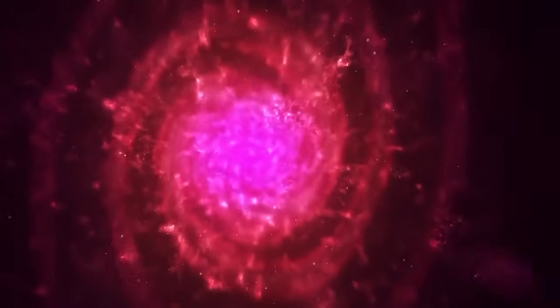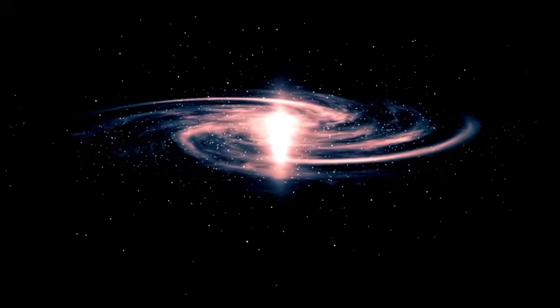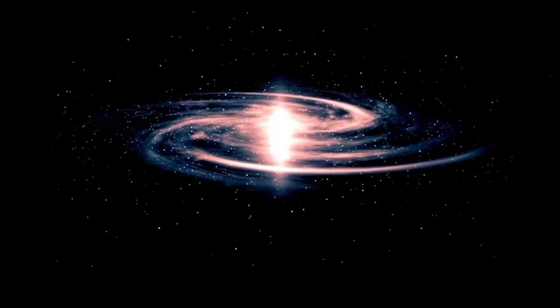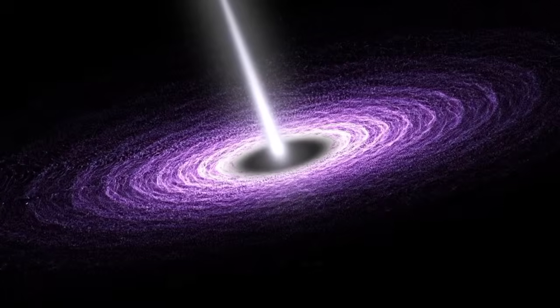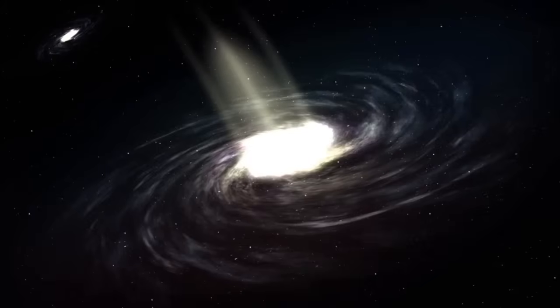In 1916, Albert Einstein published his theory of general relativity, which predicted the existence of black holes. Around that time, the idea of black holes was purely theoretical. It took an additional fifty years for researchers to find evidence that black holes, in fact, exist.